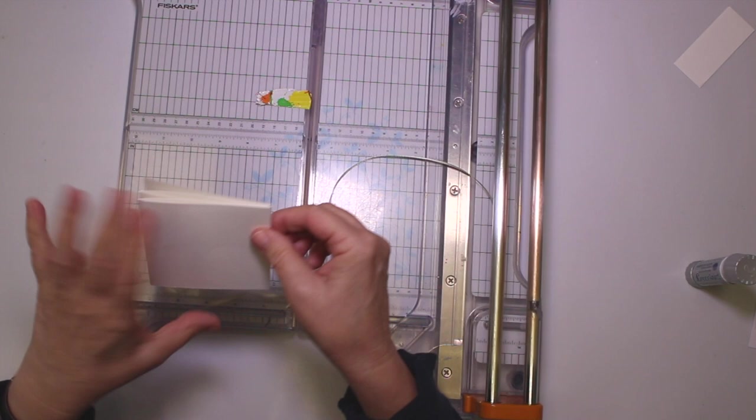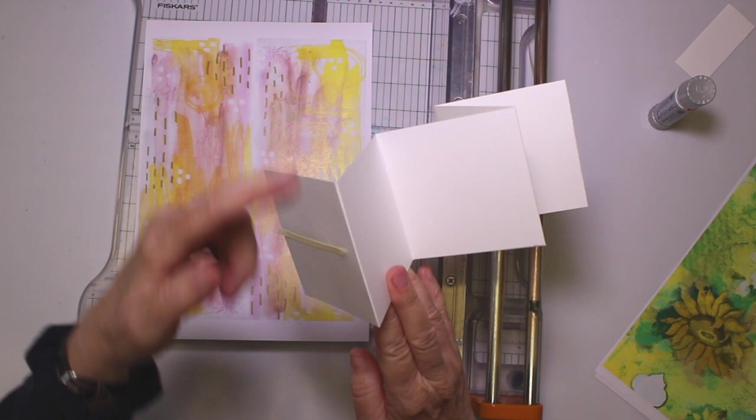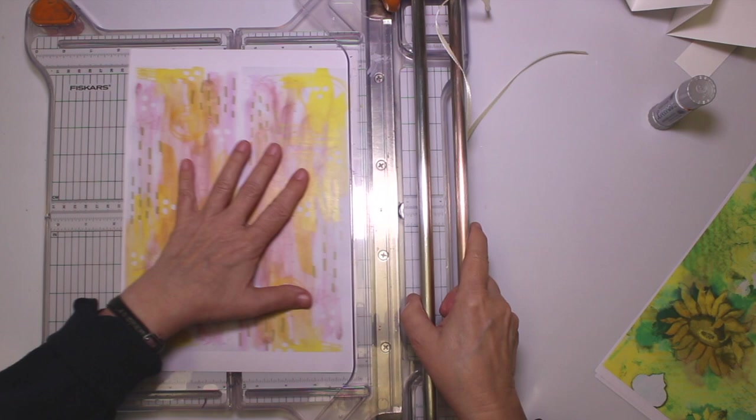Now I'm going to cut my papers slightly smaller. The paper was, as I said, three and a half by three and a half, so I'm going to cut my decorative papers three by three. I just like borders.